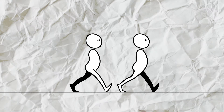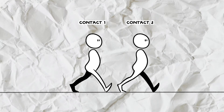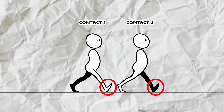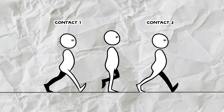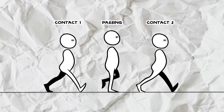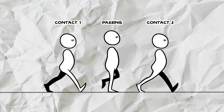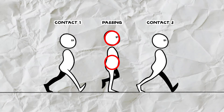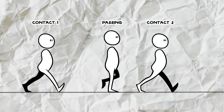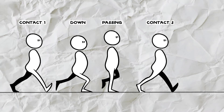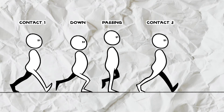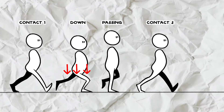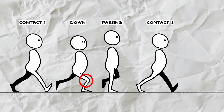We start with two contact positions where the leading foot makes contact with the floor. We add in a passing position in between. As you can see the contact foot is straight here, which elevates the position of the head and hips. We have the down position before the passing position. This is where the walk really gets that sense of weight from the contact leg bending.